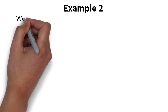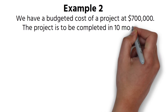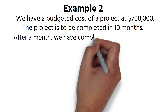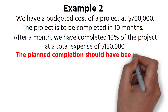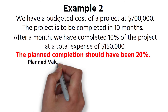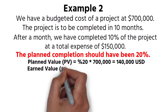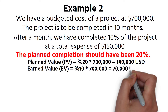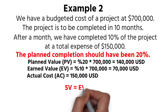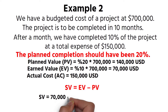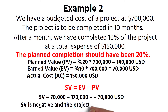Example 2. We have a budgeted cost of a project at $700,000. The project is to be completed in 10 months. After a month, we have completed 10% of the project at a total expense of $150,000. The planned completion should have been 20%. Planned Value = 20% × $700,000 = $140,000. Earned Value = 10% × $700,000 = $70,000. Actual cost = $150,000. SV = EV − PV = $70,000 − $140,000 = −$70,000 US dollars. SV is negative and the project is behind the schedule.